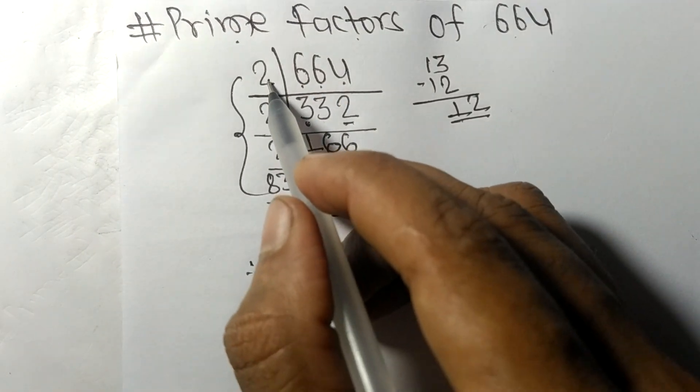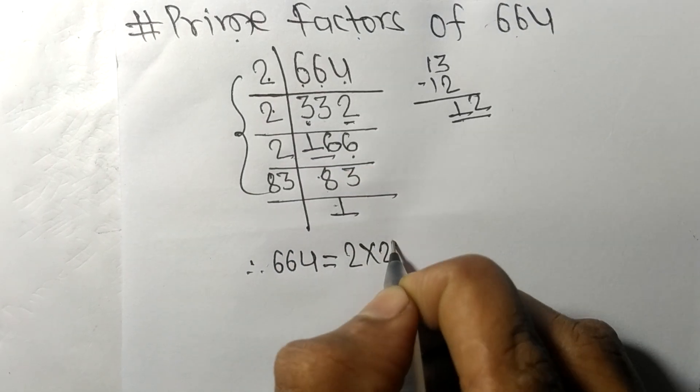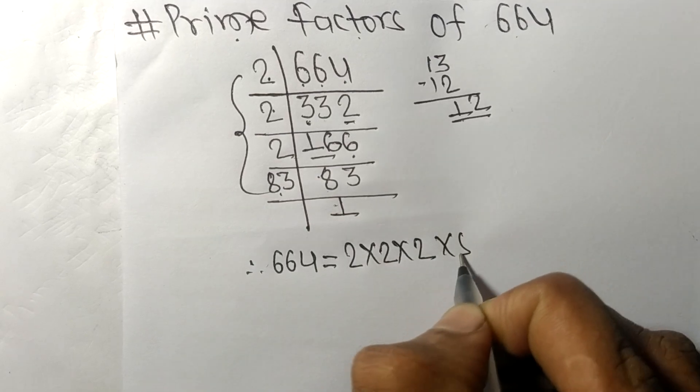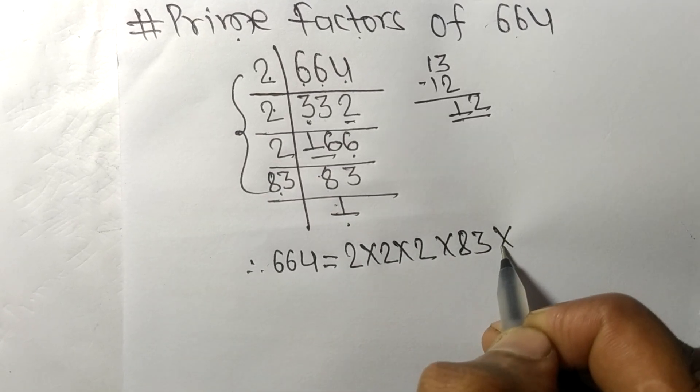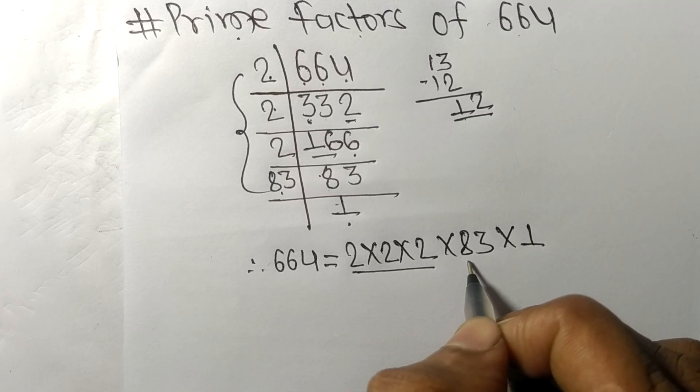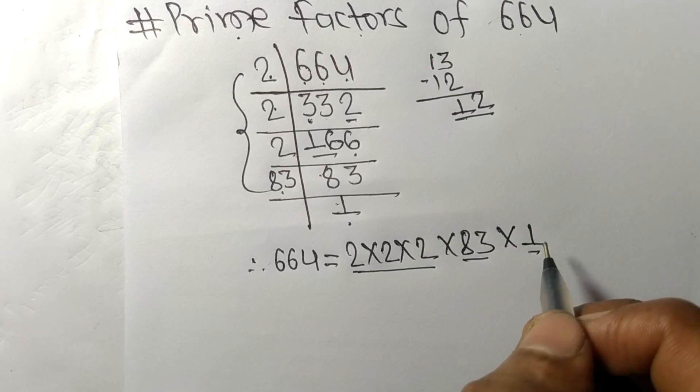From the division we have three 2s and 83. So 664 = 2 × 2 × 2 × 83 × 1. These are the prime factors of 664.